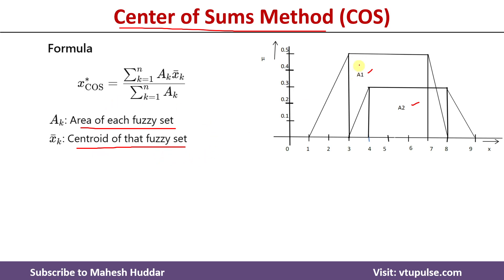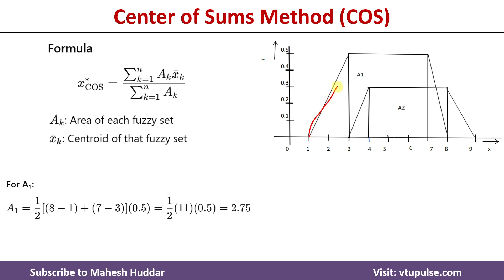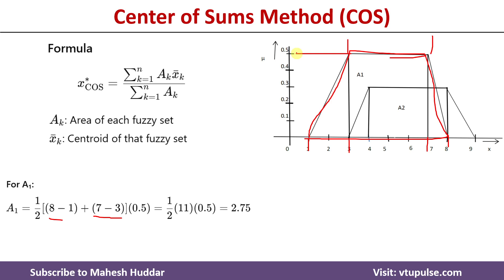Here we need to calculate the area for fuzzy set A1 and the area for fuzzy set A2. First I will consider the first fuzzy set A1. The area can be calculated for this fuzzy set as half multiplied with the base plus flat-top, multiplied with height. Here the base is 8 minus 1, and the flat-top is where the membership value is maximum. Here we can see that membership value is maximum at this point, so the x-values are 7 and 3. The flat-top value is 7 minus 3, multiplied with height of 0.5. So we get the area for the first fuzzy set as 2.75.